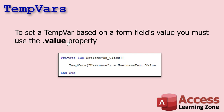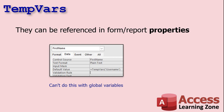You can set a TempVar based on a form field's value, but you have to use the dot value property. So if you've got a text field called username or first name, you have to say TempVars("Username") = fieldname.Value. Otherwise it's going to try to store the object itself in the TempVar, and you can't do that. TempVars can only store primitive data types — simple things like strings and dates — not objects. So if you're getting a value from a form or report, you must use dot value.